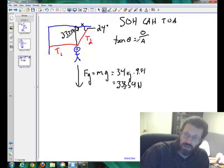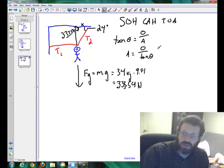Now I'm trying to find adjacent, so I'm going to multiply this side by A. If I do it on one side of the equation, I do it on the other. So I'm going to multiply that side by A. That would be tan angle times A equals opposite. And then I'm going to divide tan out on both sides. So I end up with saying the adjacent side will be equal to the opposite over the tan of our angle.